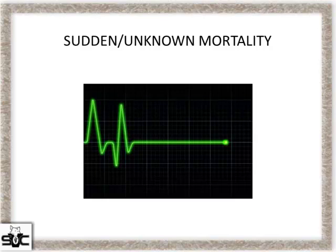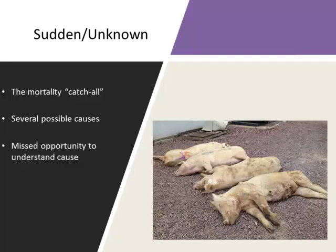The other cause of mortality we see on farms is this catch-all — sudden or unknown cause of death. What I see on farms is that when we post sows, we miss a big opportunity to understand exactly why a number of these sows die. We classify it as unknown but don't take the extra step of opening up sows to help us understand what's causing some of these deaths.